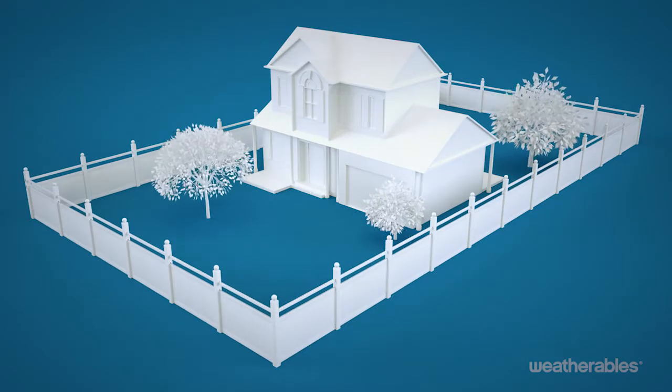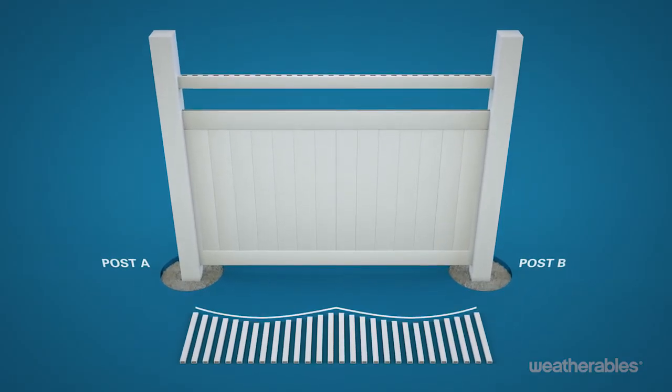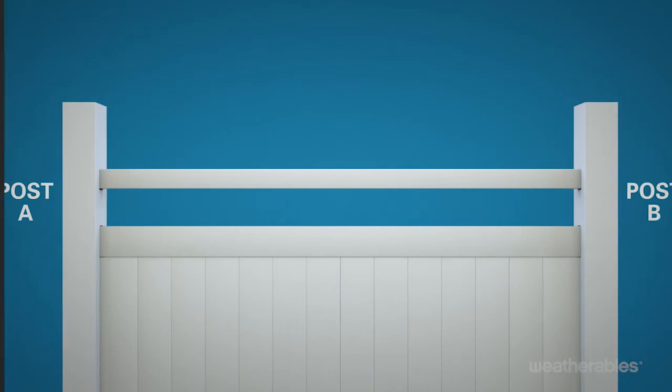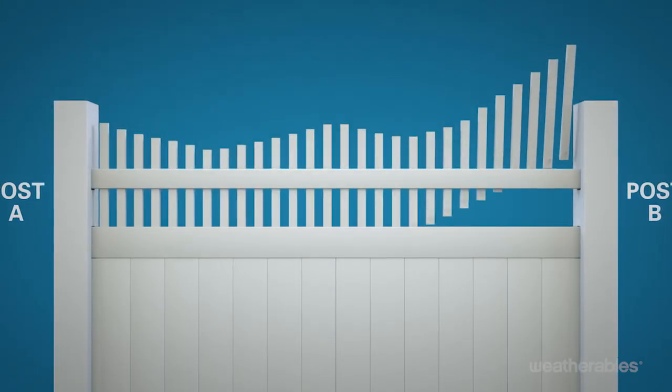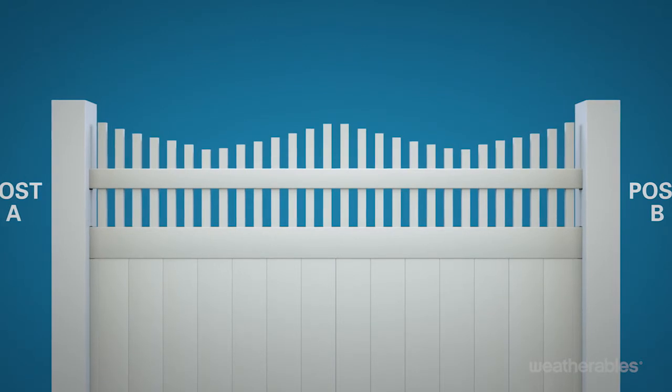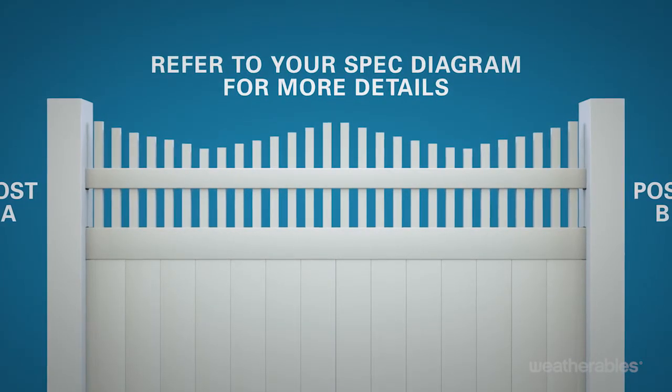To complete the fence, repeat these steps down the fence line. After all of the rails are installed, pull the appropriate size spindle from each bundle to create the double scalloped topper. Next, insert the notched end of the spindles down through the routed holes into the top and mid rail. Be sure to refer to the spec diagram included with your shipment for more details.